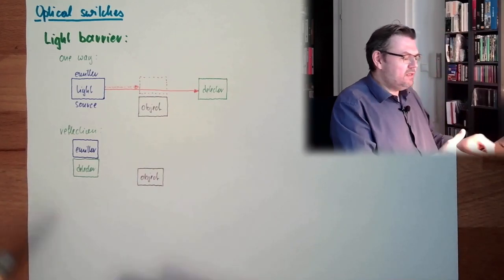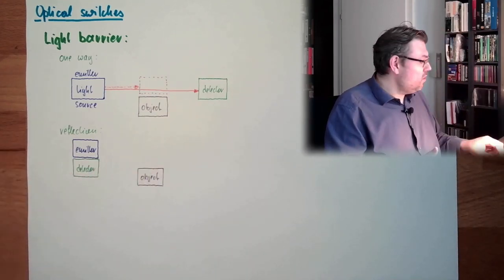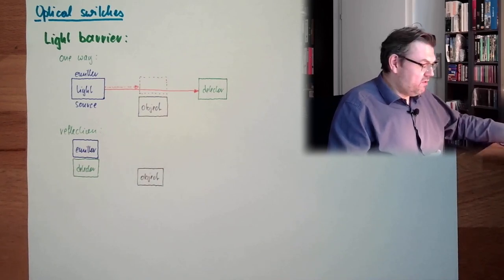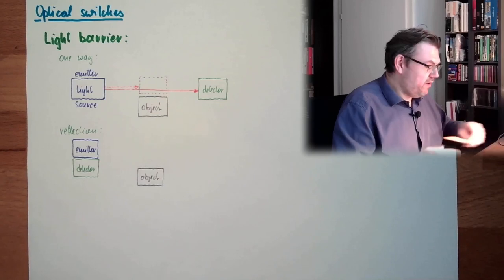And how is the light now coming from the emitter to the detector? Well, on one side we have some reflector. Here we have some reflector.